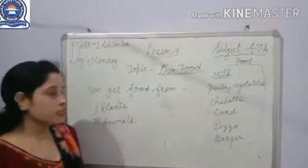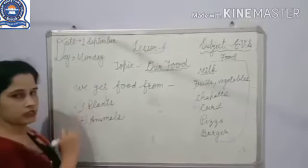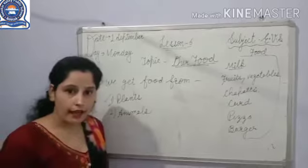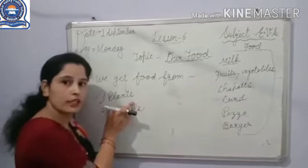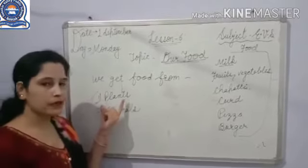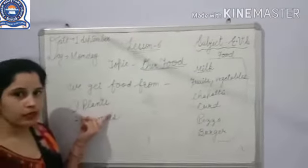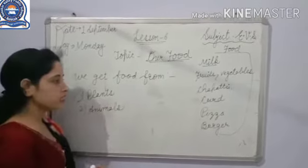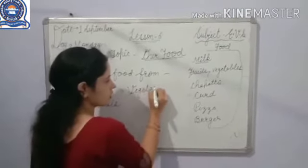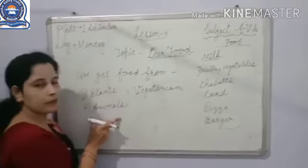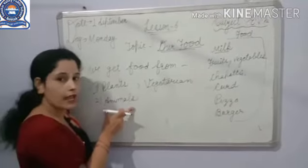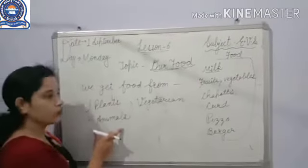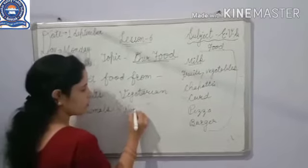The people who eat plant products like fruits, vegetables, rice, etc. are called vegetarian people. And the people who eat animal products like milk, fish, and egg are called non-vegetarian.